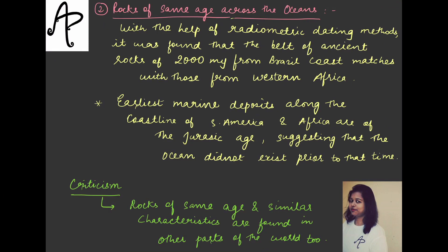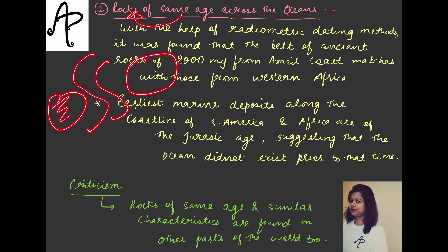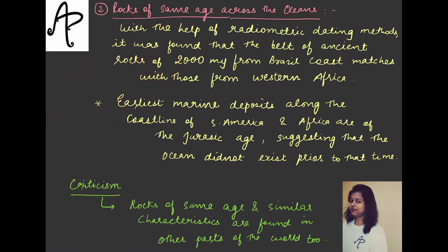Another evidence in support of the continental drift theory is rocks of the same age across the oceans. If rocks found on both sides of an ocean are of the same age or have the same characteristics, it might suggest there was no ocean previously and these two landmasses were combined. With the help of radiometric dating methods, it was found that the belt of ancient rocks of 2,000 million years from the Brazil coast matches with those from Western Africa.